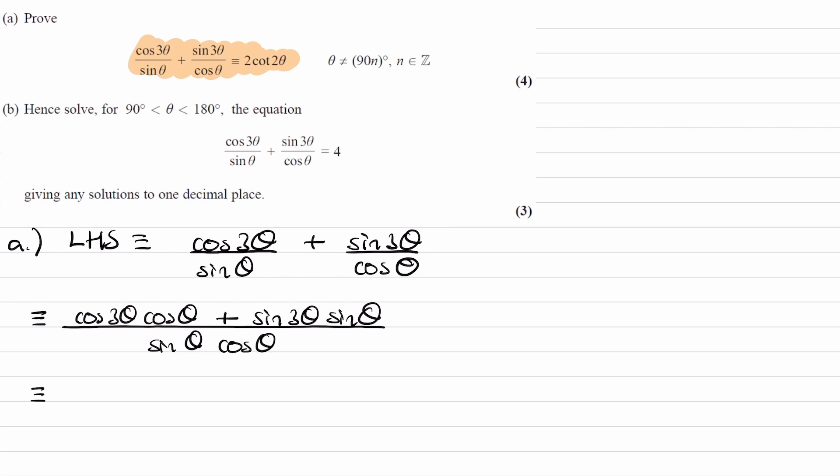This is the same thing, for the numerator, is the same thing as cos 3 theta minus theta. If you were to use the addition formula for this, it ends up being this.